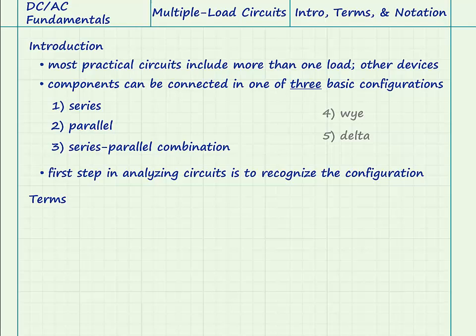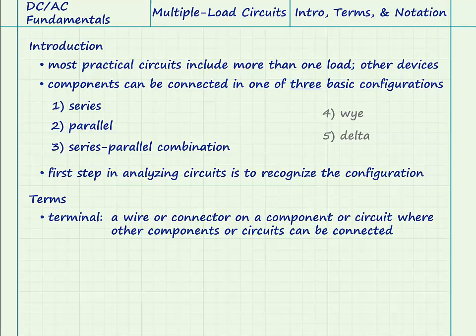There are some terms that are important in referring to and analyzing electrical circuits. A terminal is a wire or connector on a component or circuit where other components or circuits can be connected. All electrical components have at least two terminals. These may be in the form of wires permanently attached to the device by the manufacturer, or screw terminals or some other method of attachment.